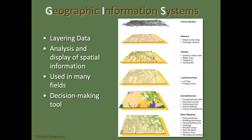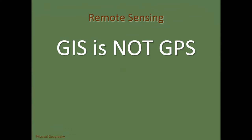GIS — not to be confused with GPS — is the usage of layered data to analyze and display information in order to make smarter decisions. You can map just about anything and layer all those maps on top of one another. It helps you make smart decisions about business location, where to build things, whether it be a business or housing. GIS is not GPS — remember that.